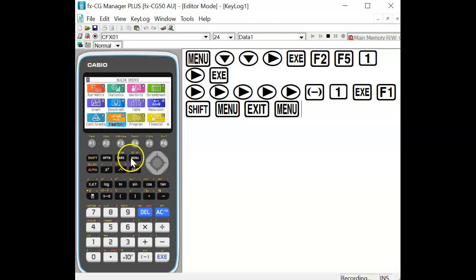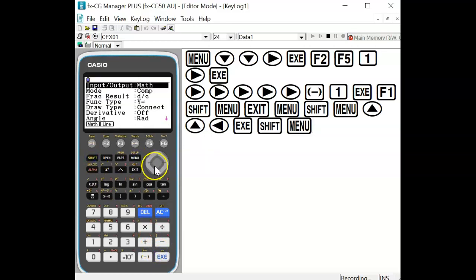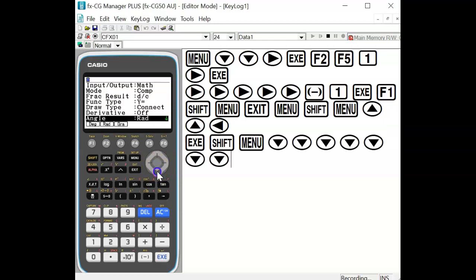So we go into menu, let's go back into our run matrix menu, shift setup, and we go down to the complex mode and change that into Cartesian form.